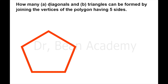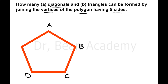How many diagonals and triangles can be formed by joining the vertices of a polygon having five sides? Here I already have a polygon with five sides, and the question asks how many diagonals and triangles we can make by joining the vertices. Let's name the vertices A, B, C, D, and E.